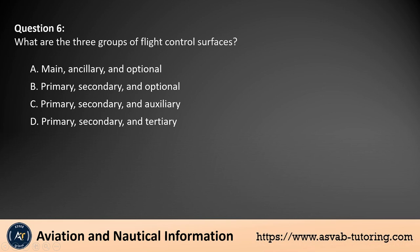Question 6. What are the three groups of flight control surfaces? A. Main, ancillary, and optional. B. Primary, secondary, and optional. C. Primary, secondary, and auxiliary. D. Primary, secondary, and tertiary.